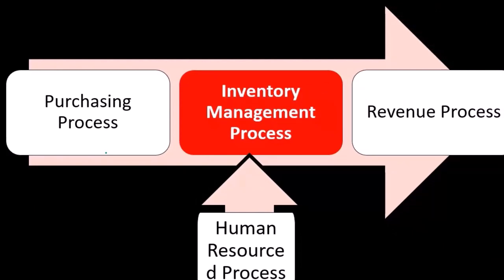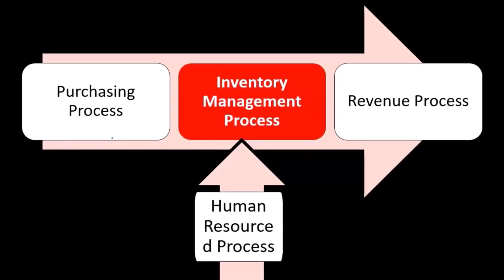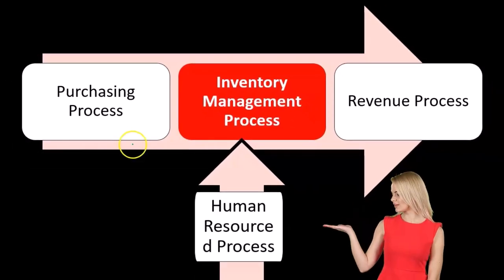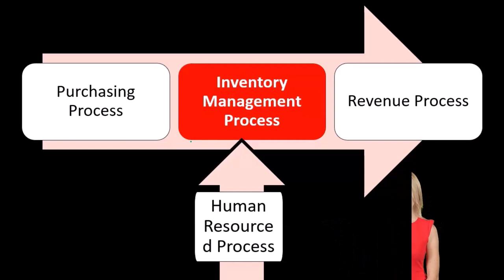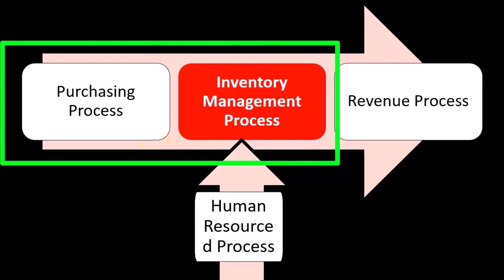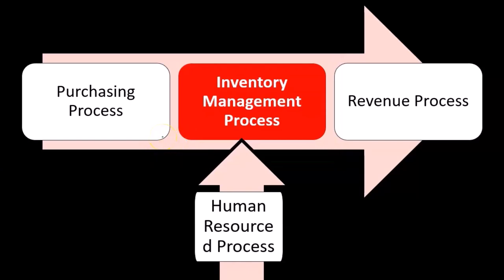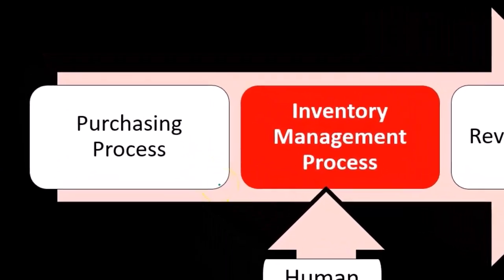As we build the audit plan, we want to keep this in consideration. When we audit something like purchasing, how much of the inventory management process will be audited? How much of that bucket of evidence can we fill with regard to inventory management as we audit the purchasing process, and the inverse as well — when we go to the inventory management process, how much can we apply to the purchasing process so we can efficiently plan?